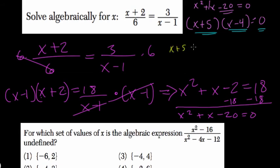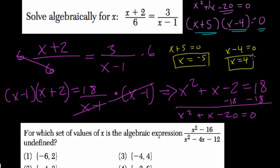x plus 5 could equal 0. In that case, we subtract 5 from both sides. And x equals negative 5, our first solution. Or x minus 4 could equal 0. Add 4 to both sides, and x equals 4. And there we have the two values that x could equal.